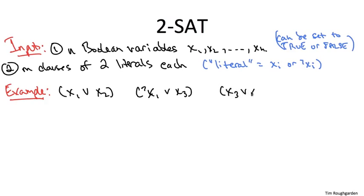Then we have a clause x3 or x4, satisfied unless you set x3 and x4 both to be false. And finally we have a clause not x2 or not x4, satisfied except in the case that you assign both x2 and x4 to be true.